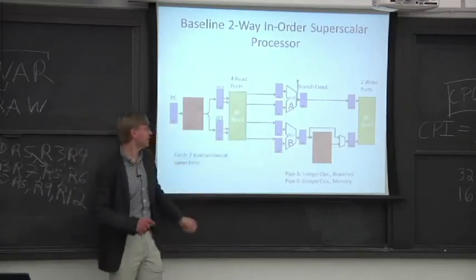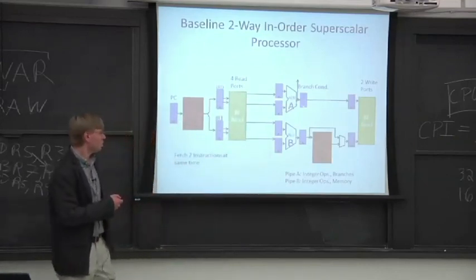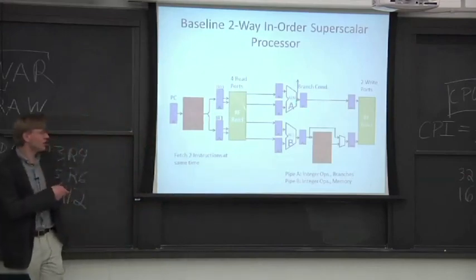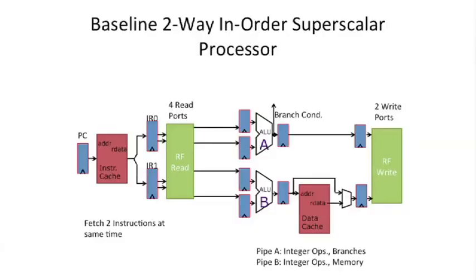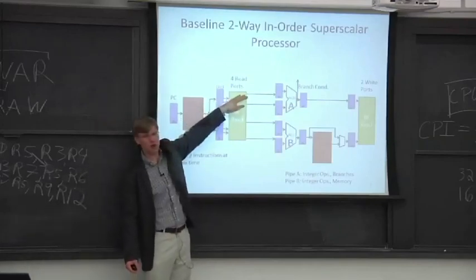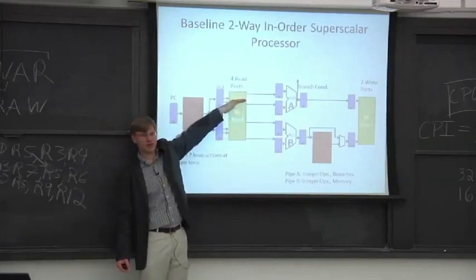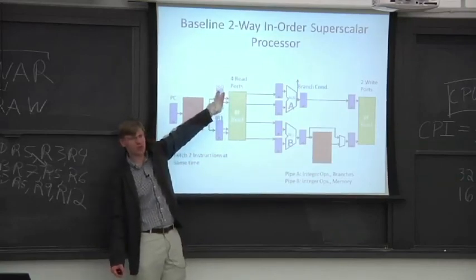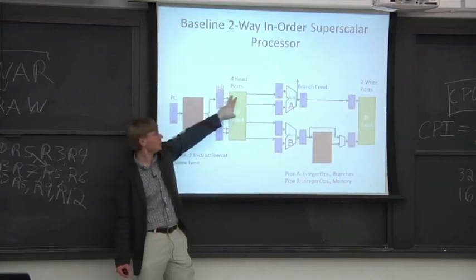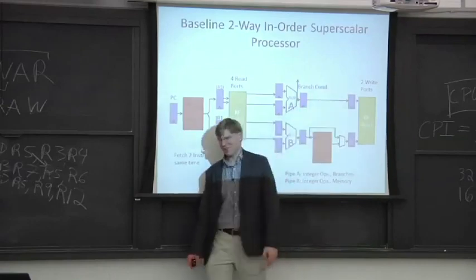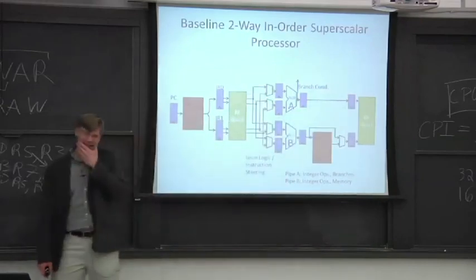In this next part here, our pipes are not symmetric. So is this good enough? What happens if the first instruction that comes out here is a load? So instruction IR0 here, the instruction register, gets loaded with the bits from the load. What happens downstream here? Can the load happen here? That's a problem.